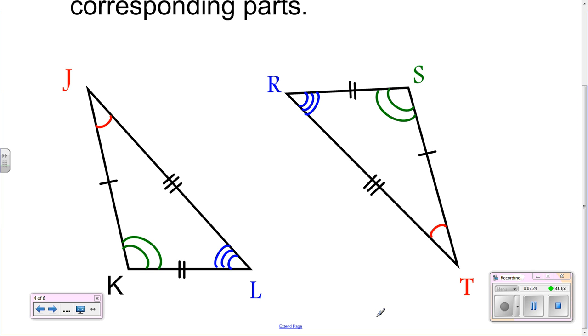Write a congruence statement for the triangles. Identify all pairs of congruent corresponding parts. So as we look at these two triangles, when it says write a congruence statement, that's going to be the part where you start with the triangles. So triangle JKL is congruent to—now whenever you write this out, you have to list the parts in the same order.